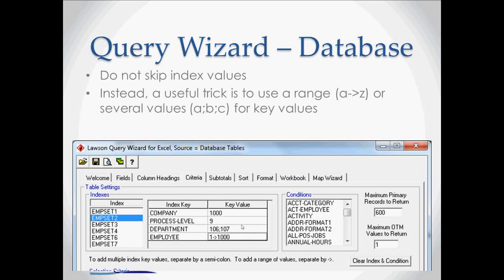The workaround is that instead of leaving a key field blank, you can put a range or a set of values. For example, you can't have company and employee filled in and then leave process level or department blank. But instead of leaving it blank, you can put a range there. For department, you could put 106 semicolon 107 — meaning both of those departments. And you can set a range by using a dash followed by a greater-than sign. In this example, 1 dash-greater-than 1000 means every employee numbered between one and 1,000 is included. The semicolon separates individual values and the hyphen followed by greater-than sign gives you a range. Using these workarounds, you can essentially skip an index key.